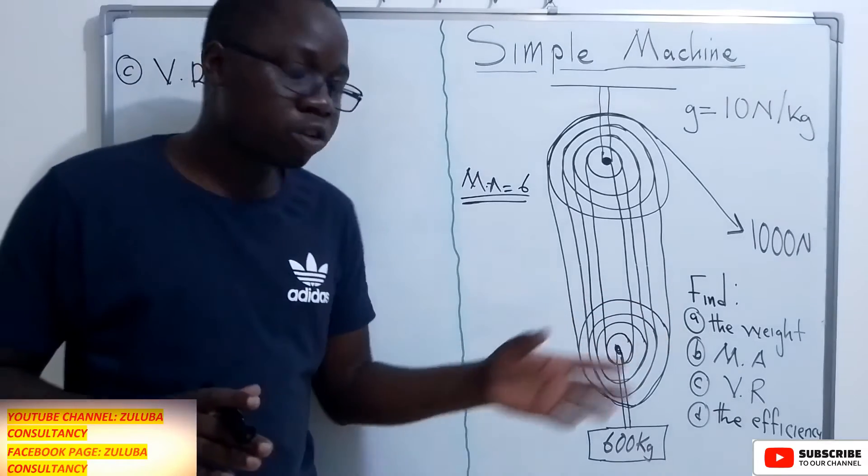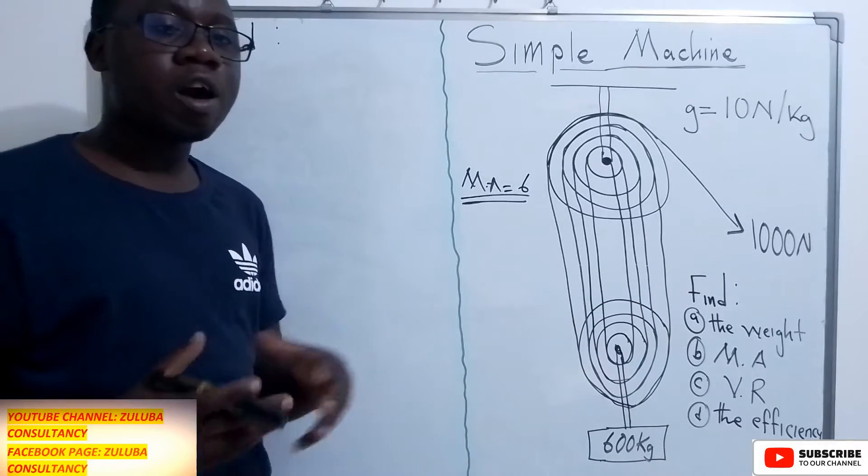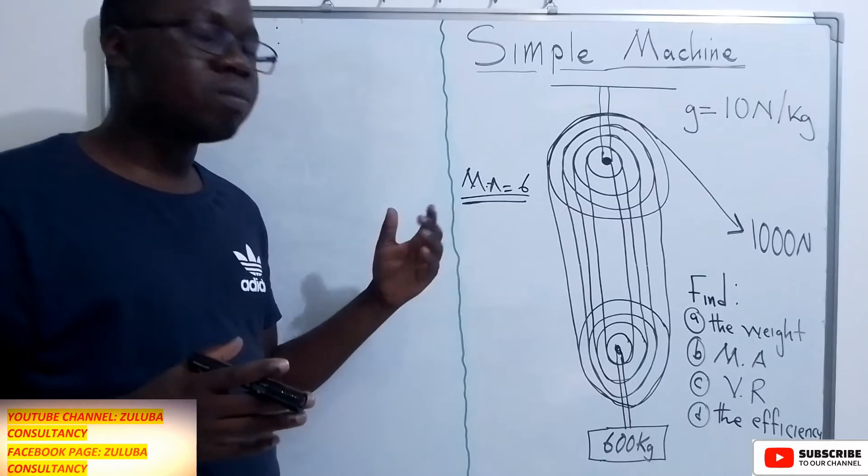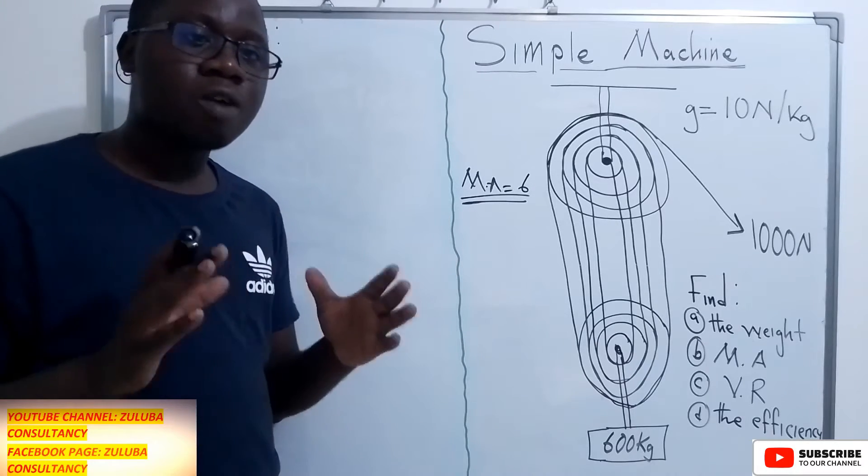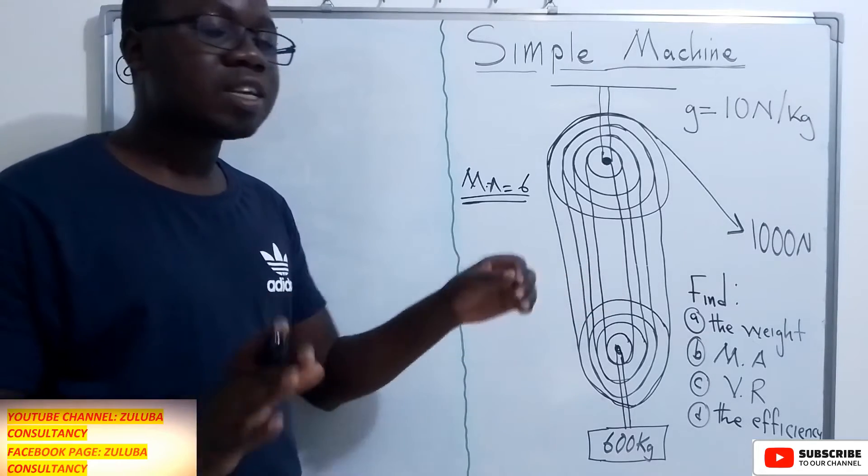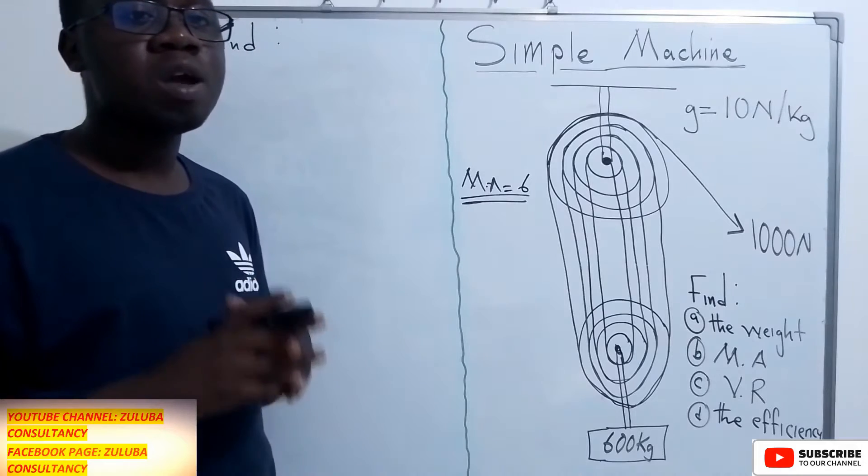We're asked to calculate the velocity ratio, which is the VR. Now, the velocity ratio in a pulley system is found by counting the number of lines that are connected to the moving pulley.